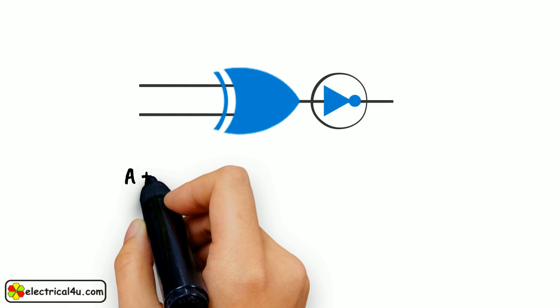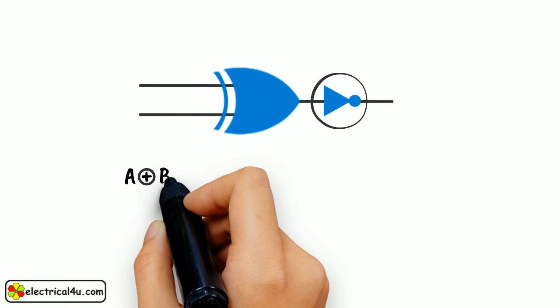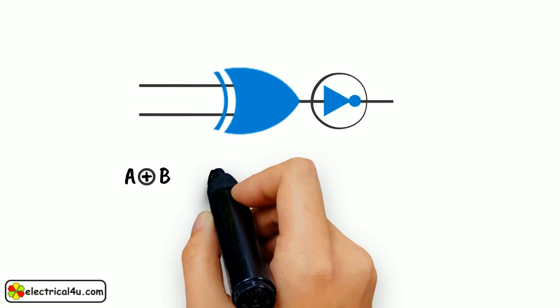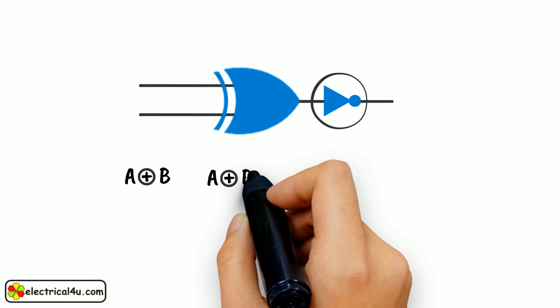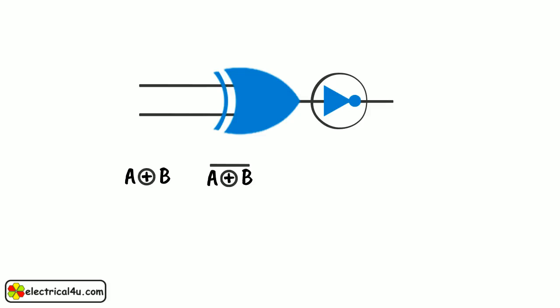As we know that XOR operation of inputs A and B is this. Therefore, XNOR operation of those inputs will be this. That means output of XOR gate is inverted in XNOR gate.